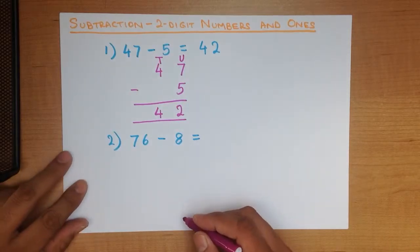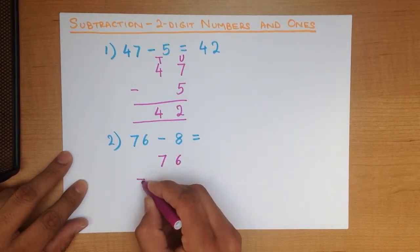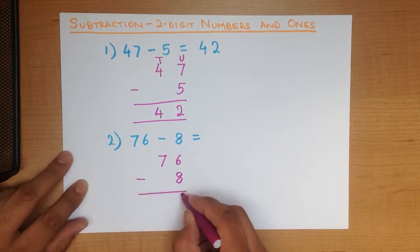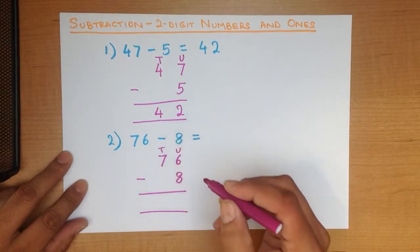Let's write the numbers down in the vertical format. We write down 76 minus 8. We can label them if we want to. Units and tens.